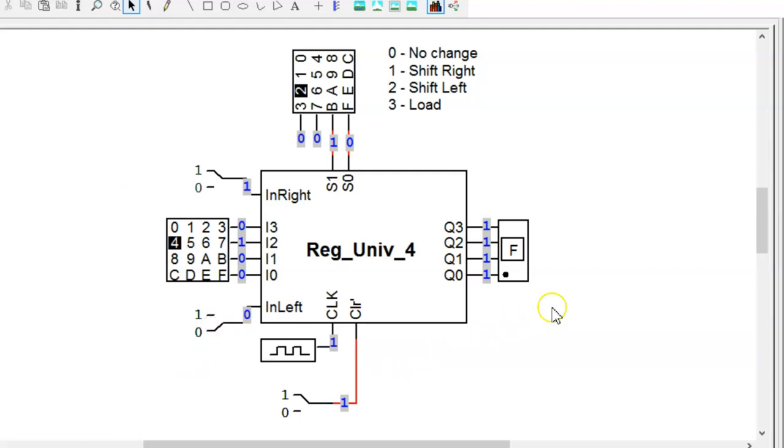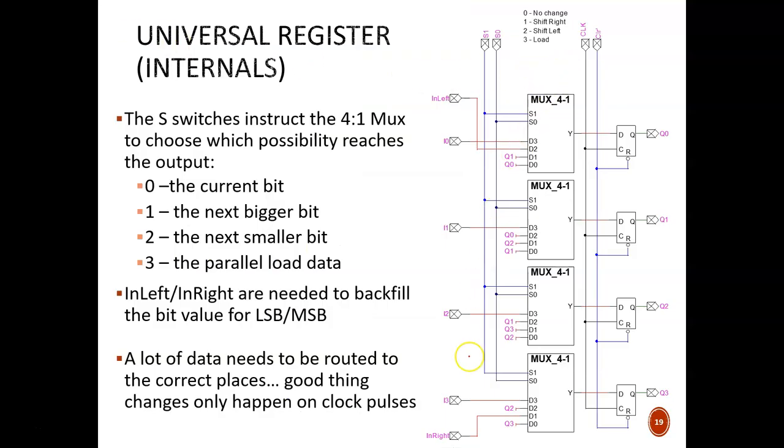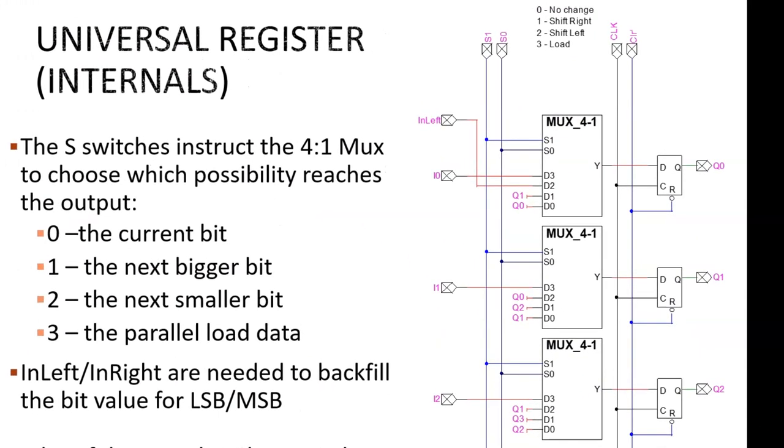So we have observed all 4 of the possible modes for this universal register. It is valuable to be able to have so many operations contained in a single device. But how does it do it? Let's go back to the slides to see the internal schematic. This schematic is greatly simplified through the shortcut of naming wires. For example, where we see Q1 labeled here, it holds the same value as this Q1 and that Q1. The source of these Q1 values would be this signal over on the right, which is the current bit value stored in flip-flop 1. Without the shortcut, this diagram would be very cluttered with wires, so we are thankful for it. It helps the slide look prettier, but more importantly, it helps us pinpoint the strategy underlying the circuit.